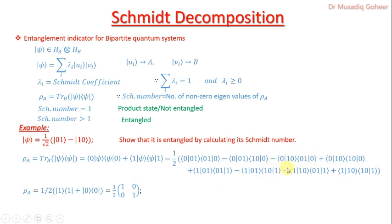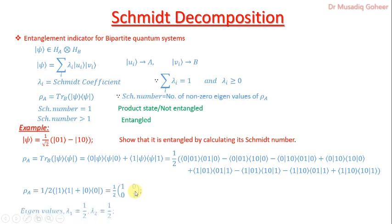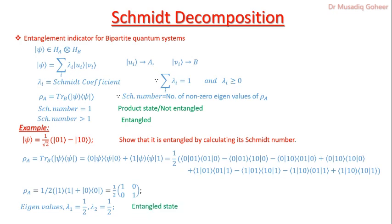After solving all terms, only two terms survive — the others cancel due to orthogonality. This gives a two-by-two reduced density matrix for system A, consistent with Schmidt decomposition reducing the system dimensions. From this density matrix we find two non-zero eigenvalues, which means the Schmidt number is greater than one, and hence the Bell state is entangled.